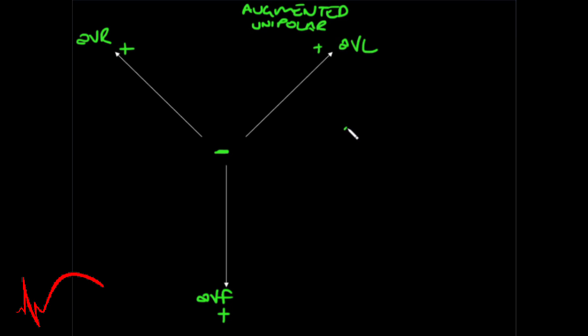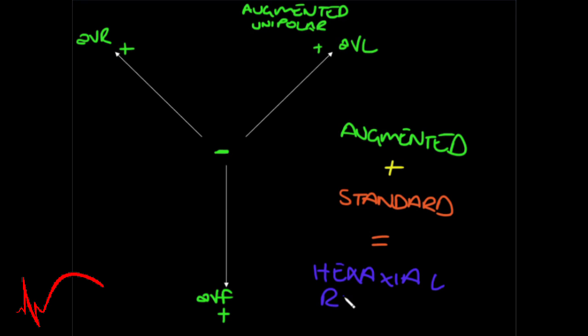Now when you combine the augmented with the standard, you get the hex-axial reference system. And using these six separate leads, we are able to determine the electrical access of the heart, which we've gone through in another video. So do check that out.